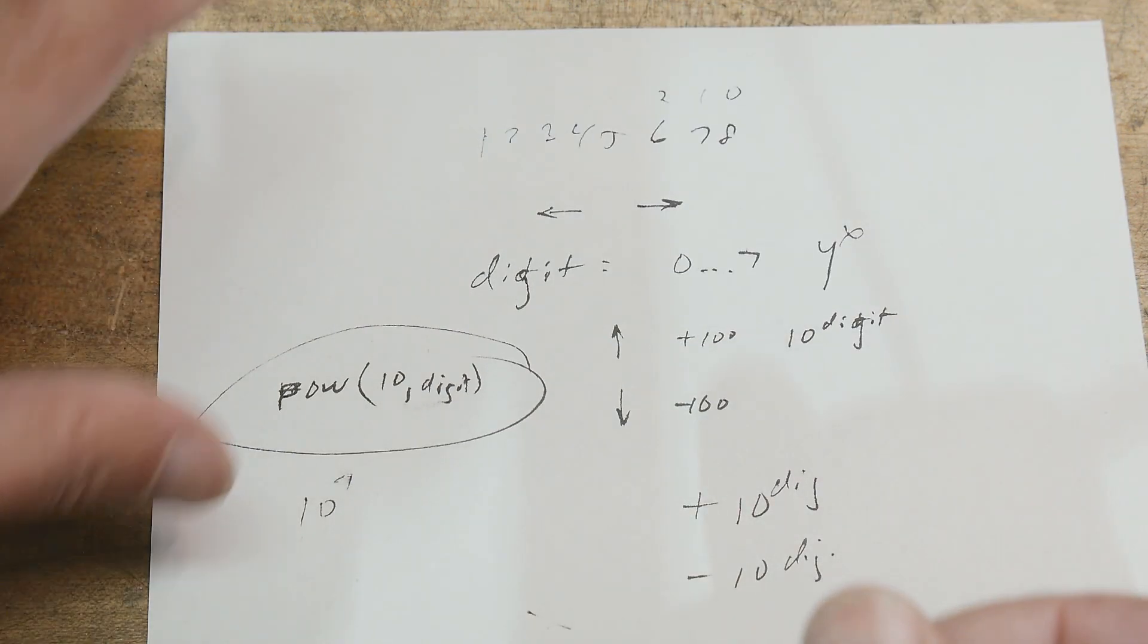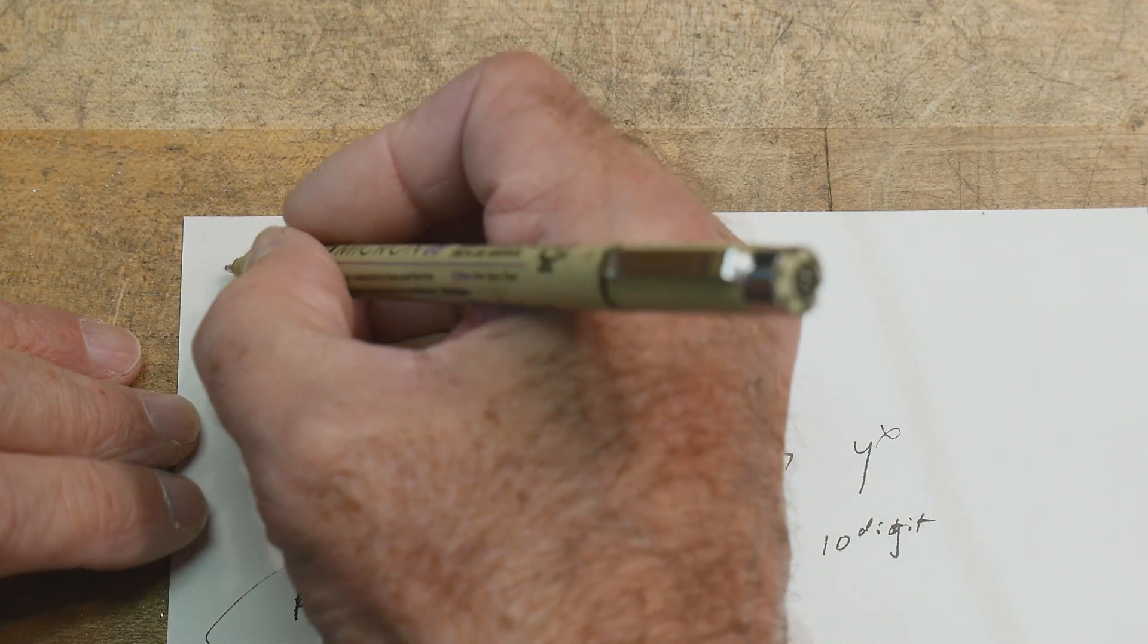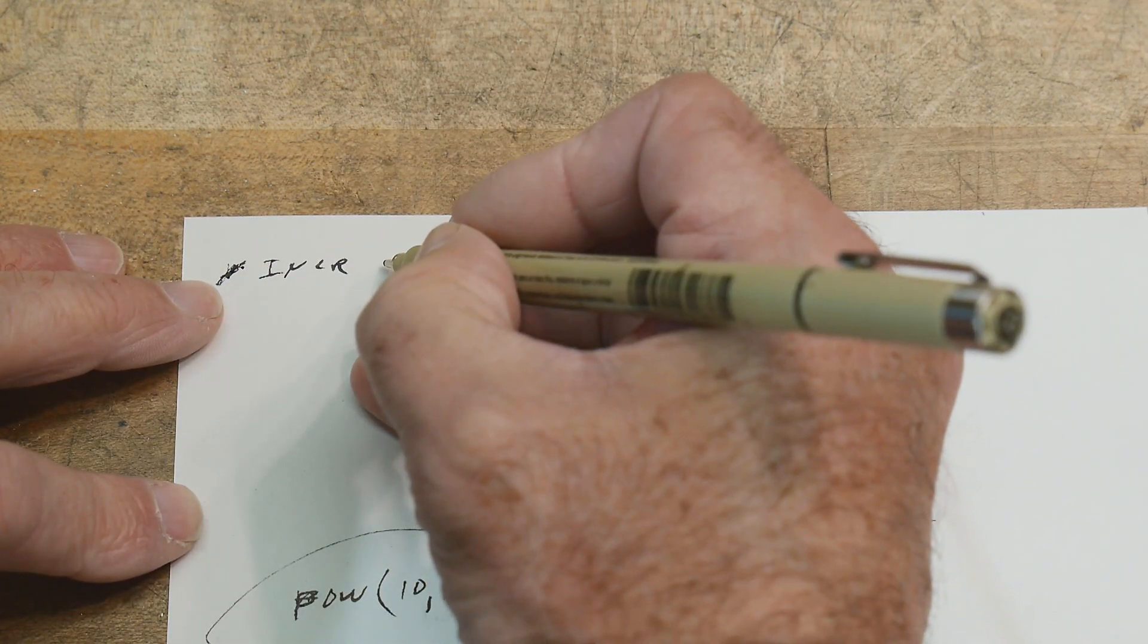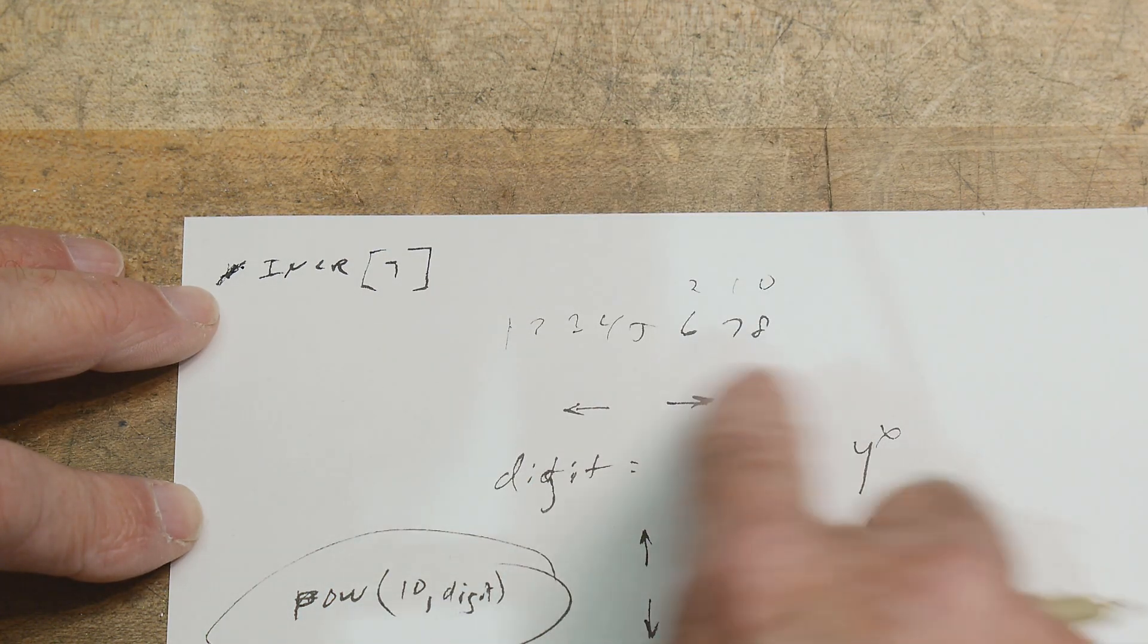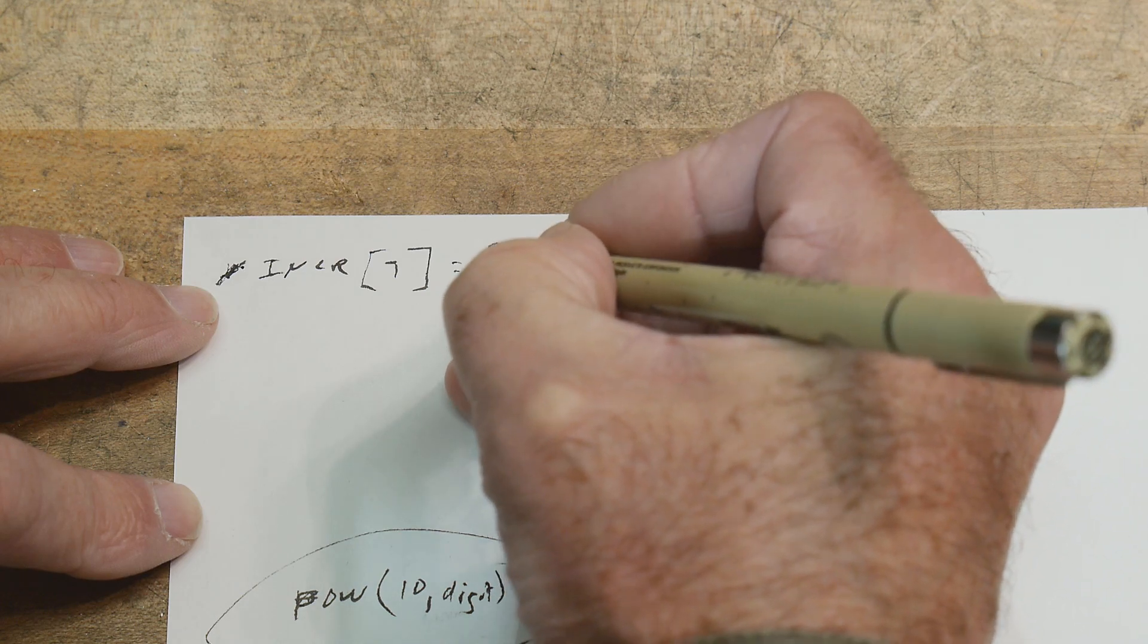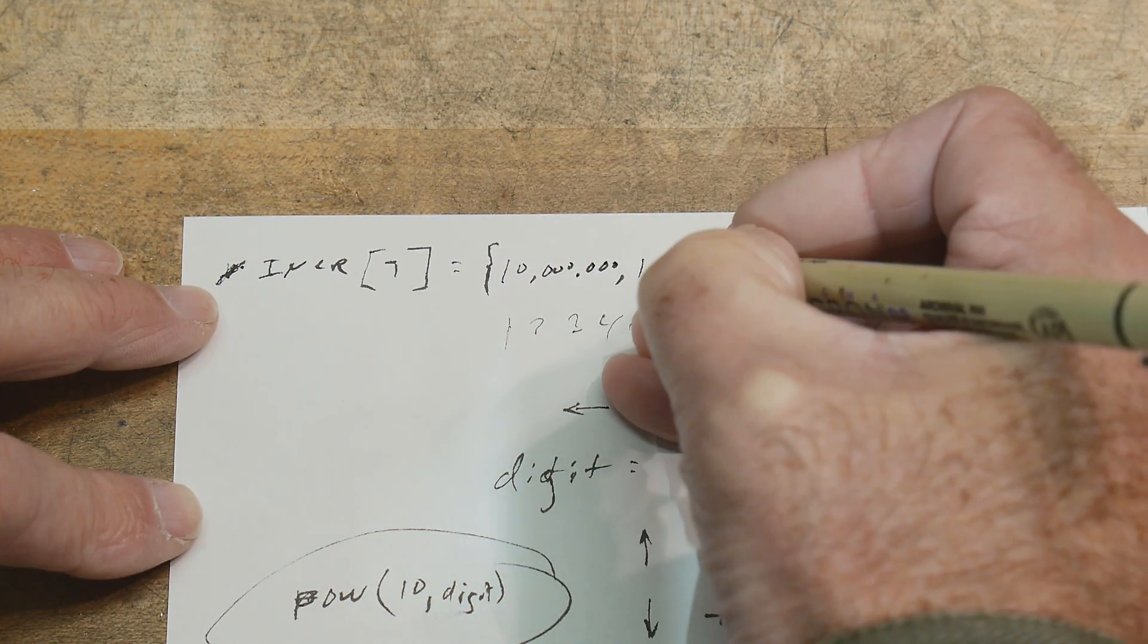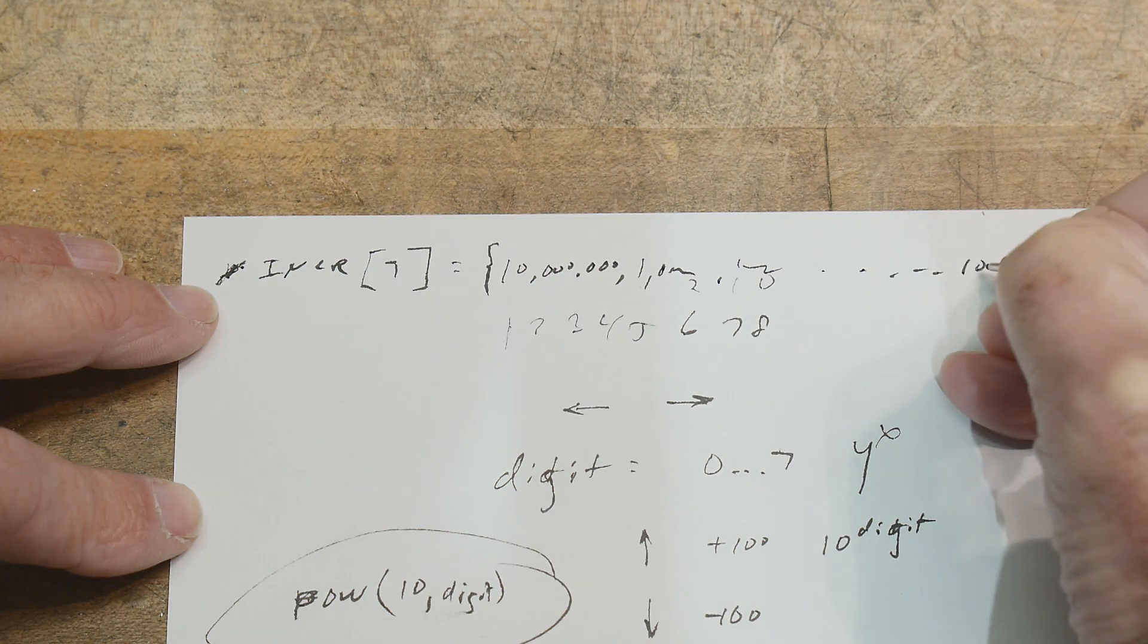So what I'm going to do is I'm going to create an array. Okay. So I'm going to call an array, we'll call it increment. And that array is going to be seven. So it's value between zero and seven. Okay. So maybe that's eight. I don't remember anyway. And we're going to say, okay, well, that's going to be 10, 10 million, one million, a hundred thousand, one thousand, a hundred, ten, one.